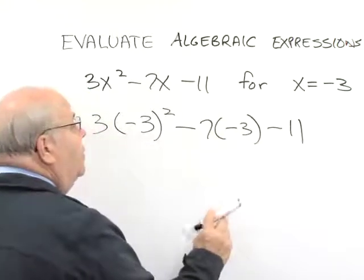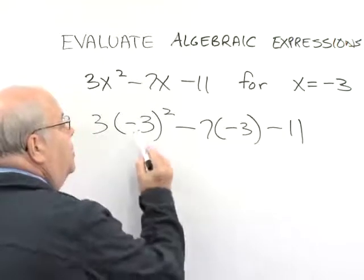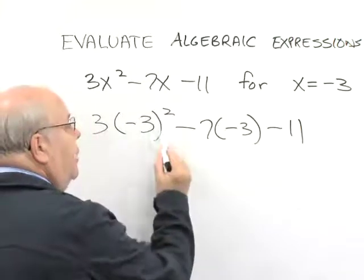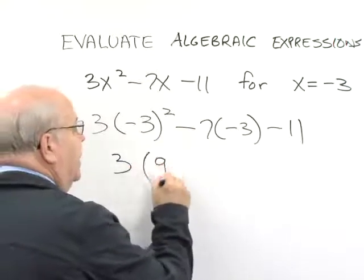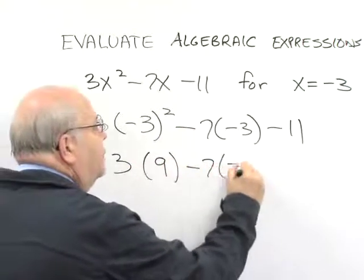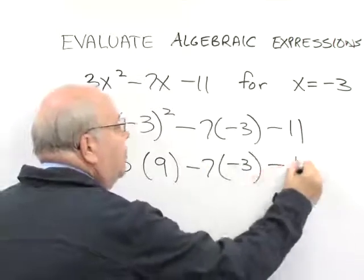Now we have to follow the proper order of operations. First we have to raise to a power. -3 squared, -3 times -3 is 9. So, our very first step is to raise to a power.